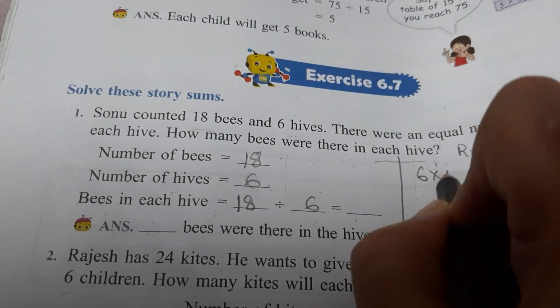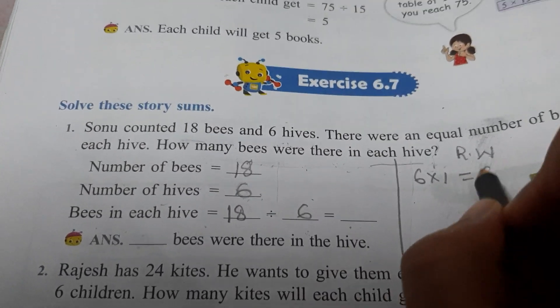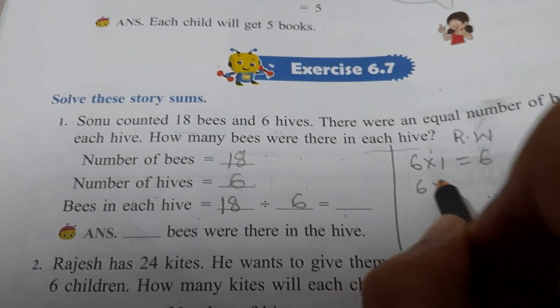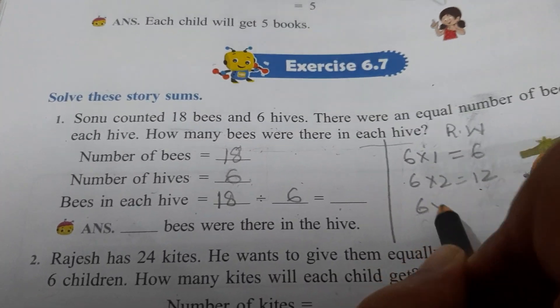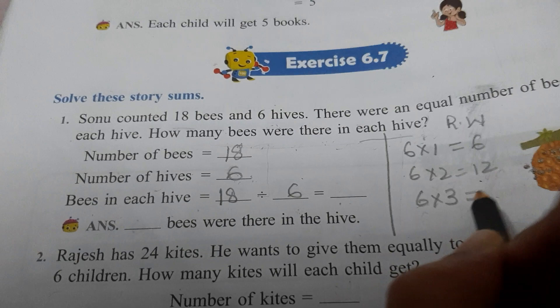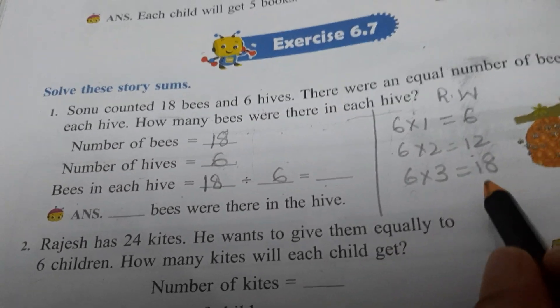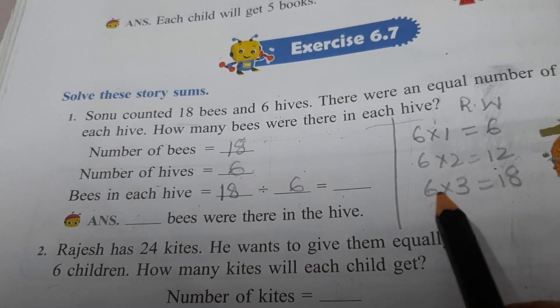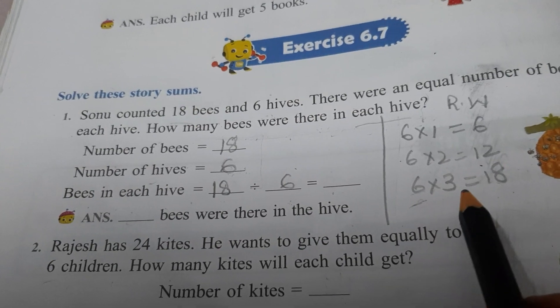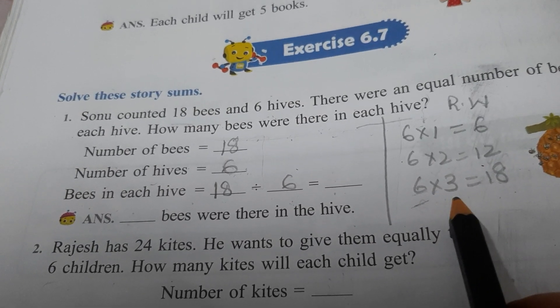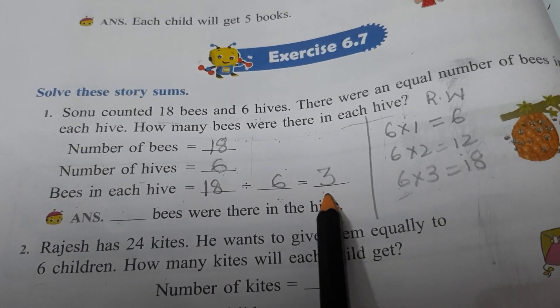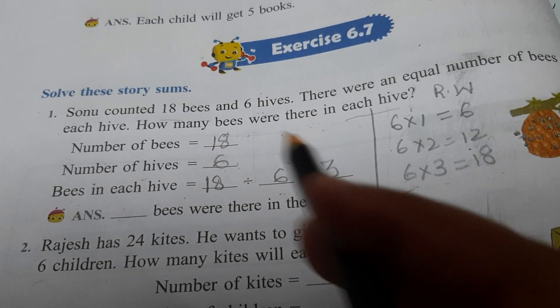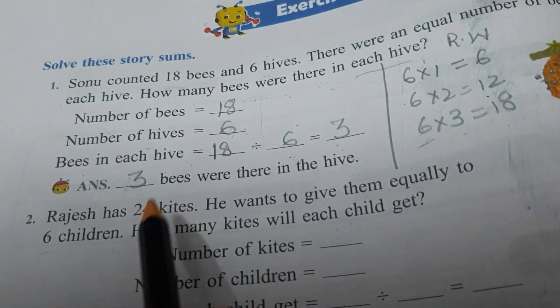So we will recall 6th table. 6 times 1 is 6, 6 times 2 is 12, 6 times 3 is 18. Now 18 is our dividend. 6 is our divisor. So which is our quotient? 3. So it means in each hive, 3 bees will be there. So 3 bees is your answer.